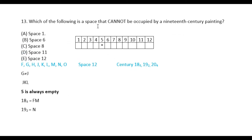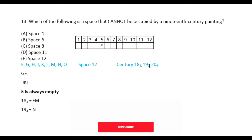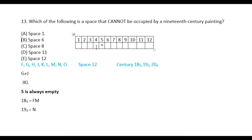Which of the following is a space that cannot be occupied by a 19th century painting? The smallest object is occupied by a 19th century painting. The building can be made of three to two, so the design is picked up by a 19th century painting comprised of three to two. The painting is occupied by two.